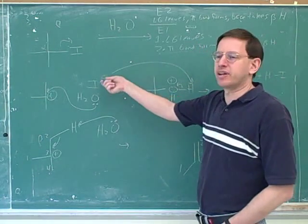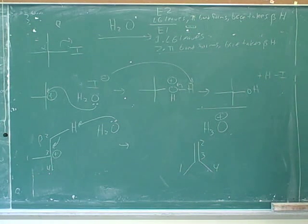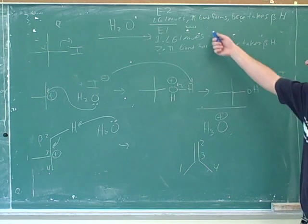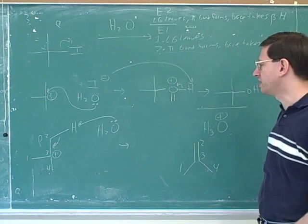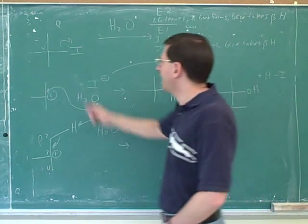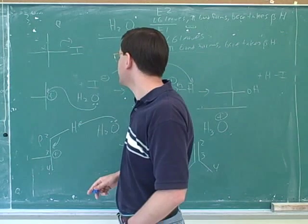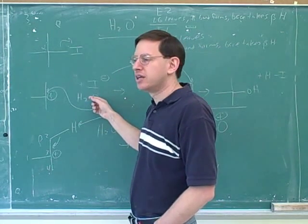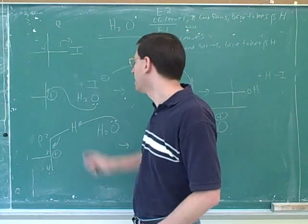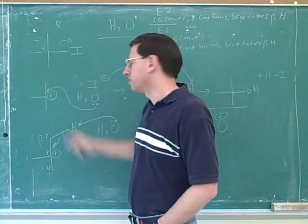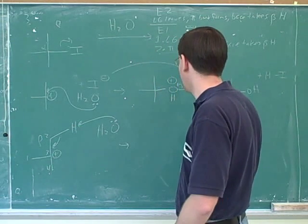What happened to the iodide? It just goes floating off — the iodide's not interesting to us anymore, it's just the leaving group. So that was our E1 reaction. This is an excellent example of the difference between a nucleophile and a base: a nucleophile joins the alpha carbon, whereas a base steals the beta hydrogen. In SN1 the water attacks as a nucleophile, but in E1 the water attacks as a base.